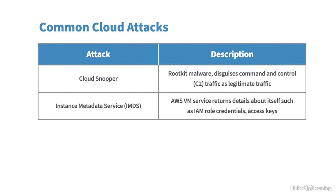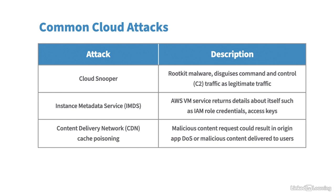Another common cloud attack is a Content Delivery Network (CDN) cache poisoning attack. A CDN is a copy of data from origin web servers stored strategically in a region near users to reduce content delivery time. The attack involves malicious content being injected, or a malicious request sent to gain access to back-end origin servers. It could result in a denial of service (DoS) attack to bring a server down, or malicious content being delivered to users because it was injected into the CDN cache.